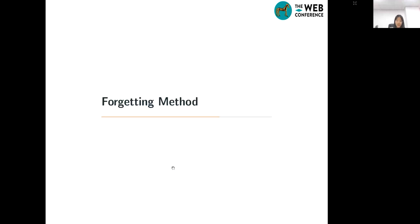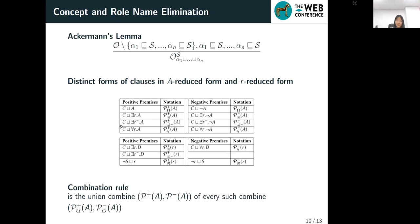And then I will introduce about the forgetting method. The calculus of elimination is based on Ackermann's Lemma, which forms like this. The calculus for eliminating a concept A or a role named R from N is based on some inference rules, namely the combination rules. The combination rules is applicable to N to eliminate A or R if and only if N is in A-reduced form or R-reduced form.